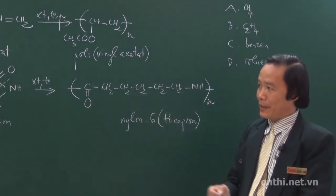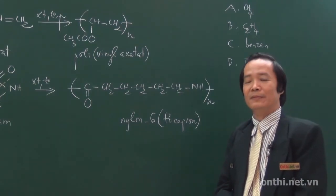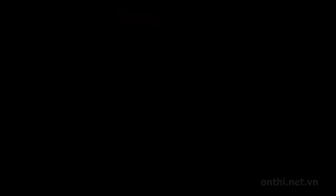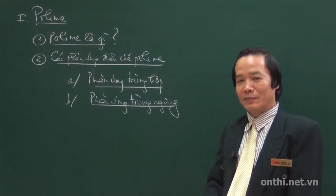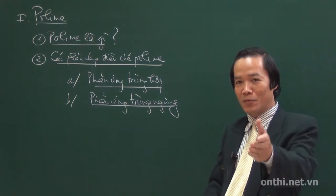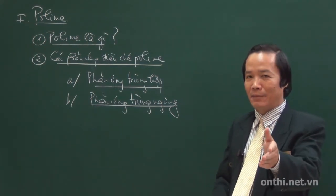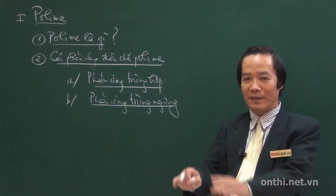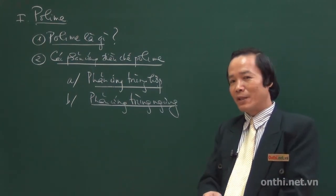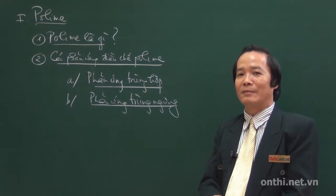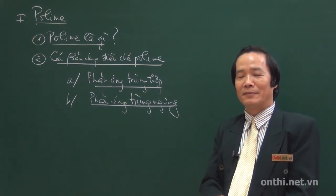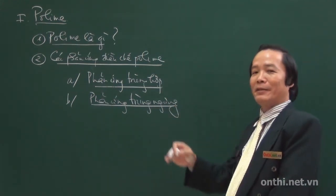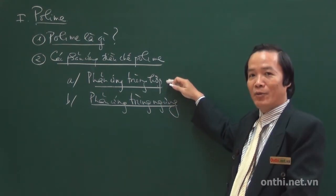Ta sang phản ứng thứ 2 là phản ứng trùng ngưng. Phản ứng trùng ngưng cũng dùng để điều chế polymer, nhưng đặc điểm là luôn luôn sinh ra nước hoặc các phân tử nhỏ khác. Trong chương trình phổ thông, phân tử nhỏ này luôn luôn là nước. Còn trùng hợp thì chỉ sinh ra polymer duy nhất mà thôi.